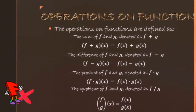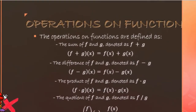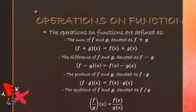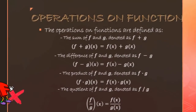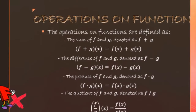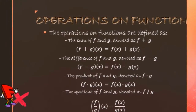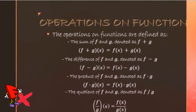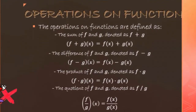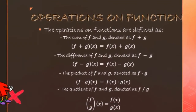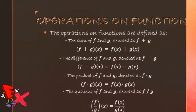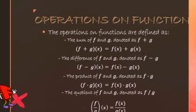Now let's proceed with operations on functions. We have 4 basic operations in mathematics: addition, subtraction, multiplication, and division. The operations on functions are defined as follows. For the sum: (f + g)(x) = f(x) + g(x). For the difference: (f − g)(x) = f(x) − g(x). For the quotient: (f/g)(x) = f(x)/g(x).